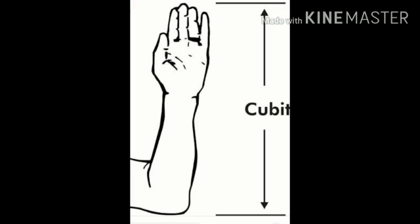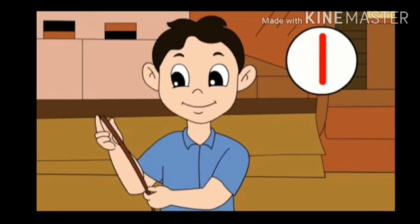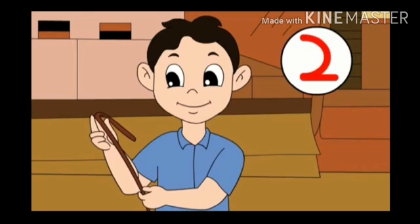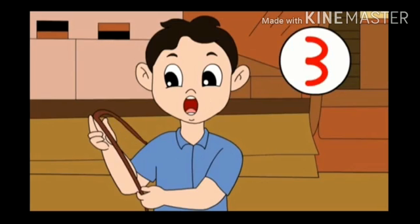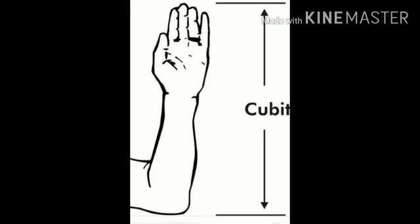Now observe children — what is a cubit? It is the measurement of your arm, from the elbow to the tip of your middle finger. Now Rahul wants to measure a rope using his cubit. See how he is measuring: one cubit, from the elbow to the tip of his middle finger. Then two cubits, then three cubits, and again four cubits. So he has taken four cubits of rope.